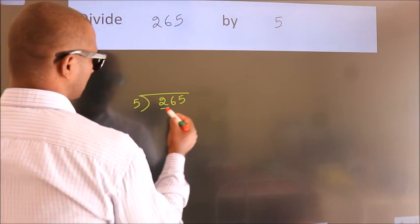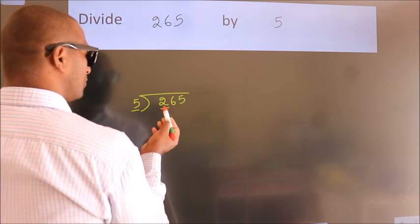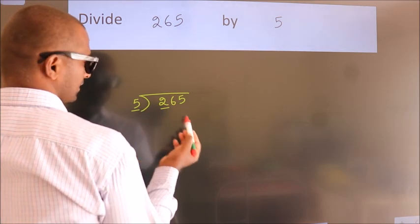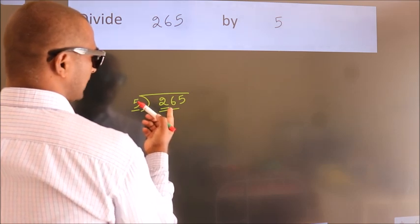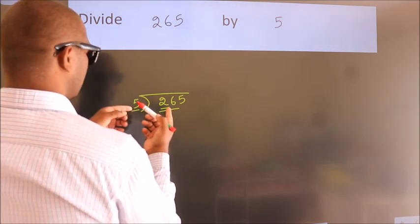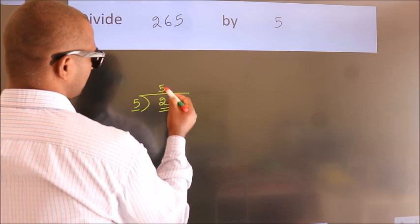Here we have 2. Here 5. 2 is smaller than 5, so we should take 2 numbers: 26. A number close to 26 in the 5 table is 5 fives, 25.